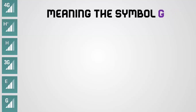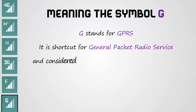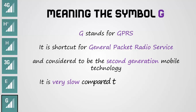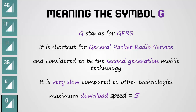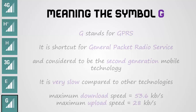Meaning of the symbol G: G stands for GPRS, which is short for General Packet Radio Service. It is considered to be the second generation mobile technology. It is very slow compared to other technologies. Maximum download speed equals 53.6 kbps. Maximum upload speed equals 28 kbps.